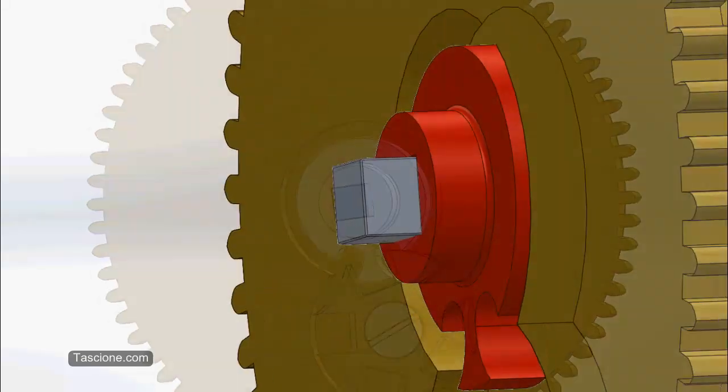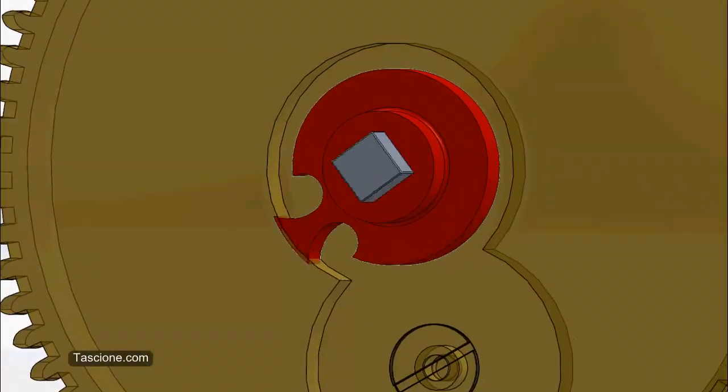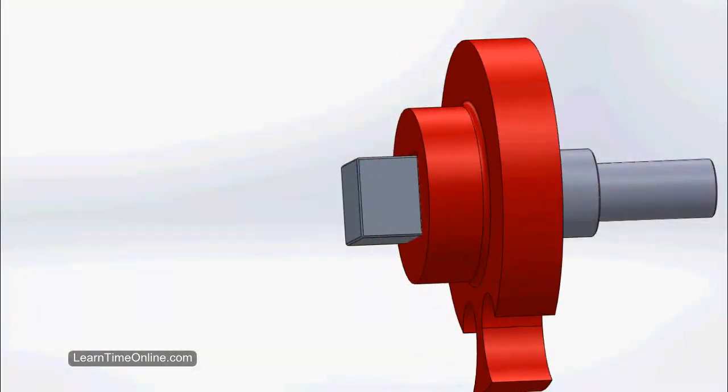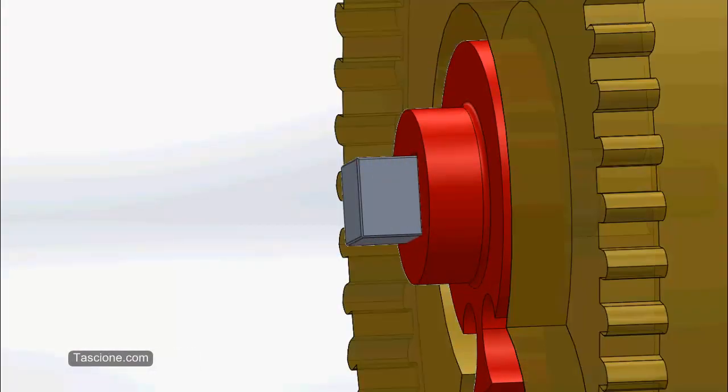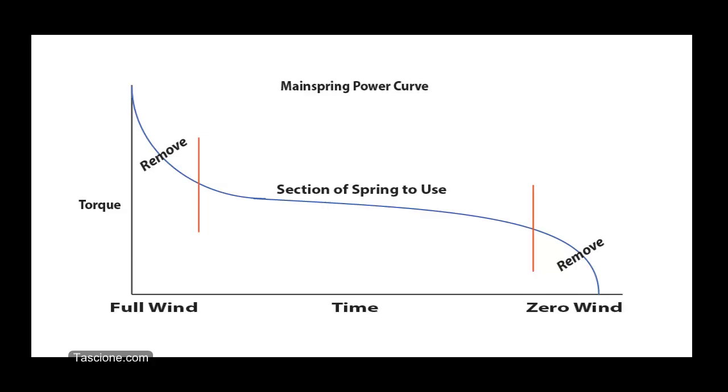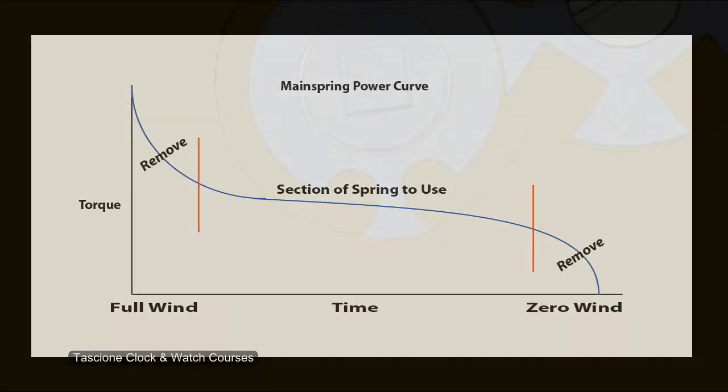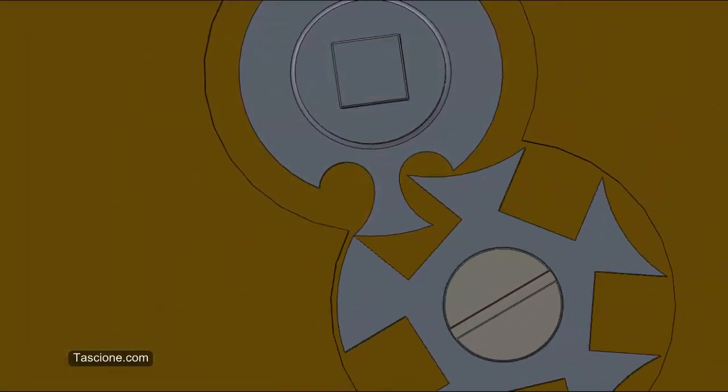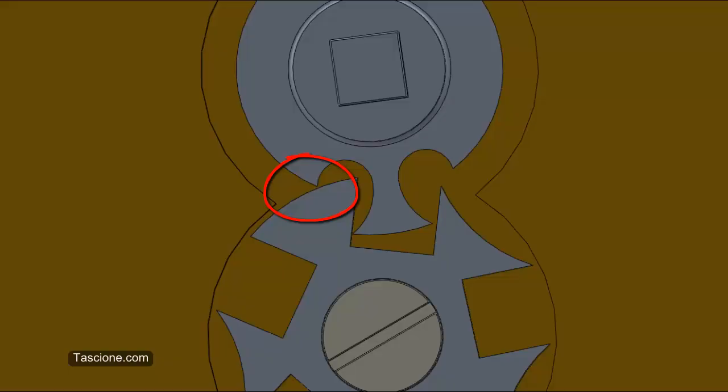We'll start out by covering what the two components that make up the stopwork look like and how they fit onto the mainspring arbor and barrel. And then we'll talk about what it was even good for in the first place. It did serve a purpose, and it's amazing how such a simple design could make such a big difference in a timepiece's accuracy.